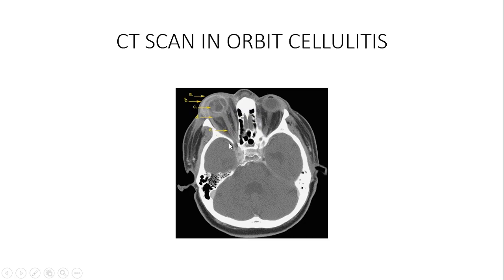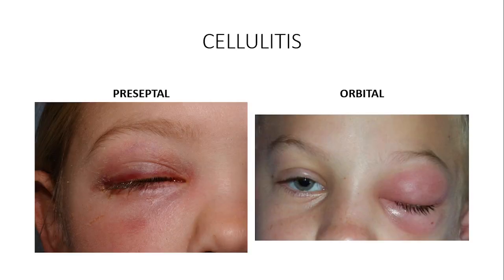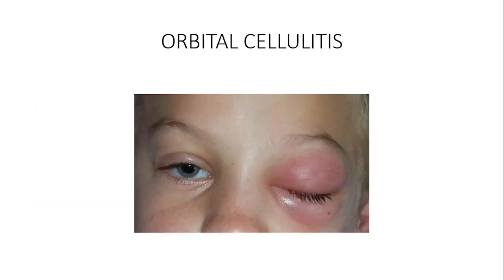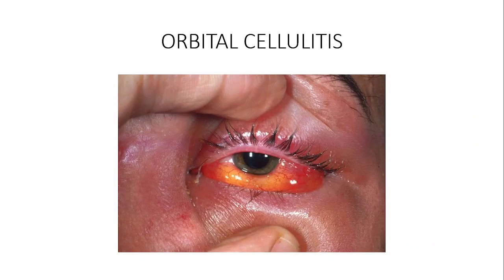On CT scan, hyperdensity — appearing whiter — is seen in the affected orbit compared to the normal side. You can observe the optic nerve, the medial rectus, and the lateral rectus with more opacification in the infected orbit. Lumbar puncture is not routinely done unless meningitis is suspected.